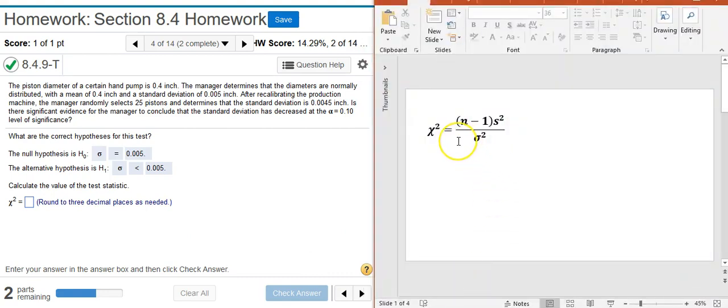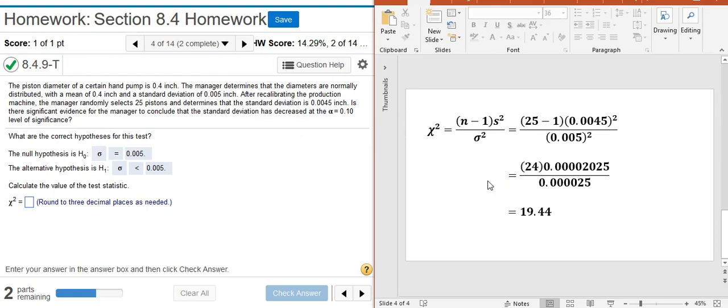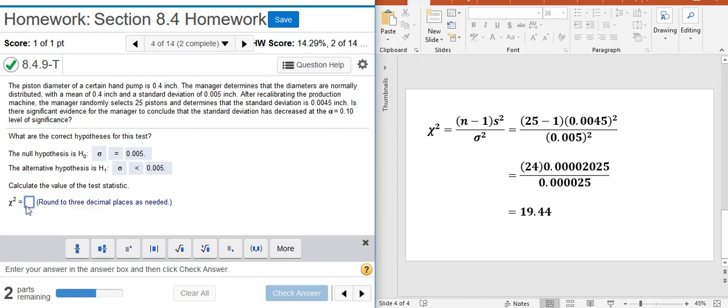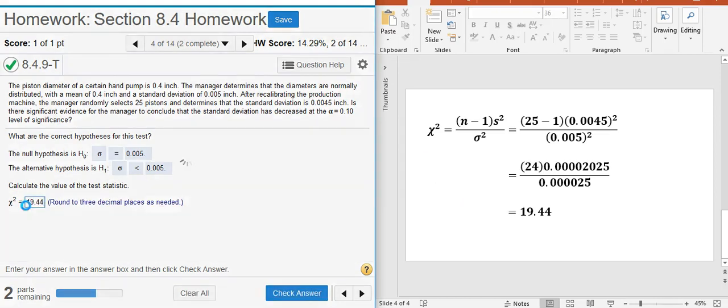Our test statistic is computed by using this equation right here. So we've got n minus 1, the sample size. So this is essentially our degrees of freedom times our sample variance divided by our population variance. If we put the numbers from the problem statement here into this equation, this is what we get. There's 25 in our sample size. So that number goes in for n. And then our sample standard deviation is 0.0045. And then the population standard deviation 0.005. If I go ahead and compute this out, I end up with 19.44. So there's my test statistic, 19.44. Fantastic!